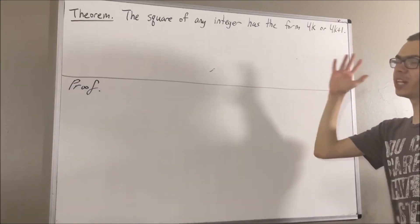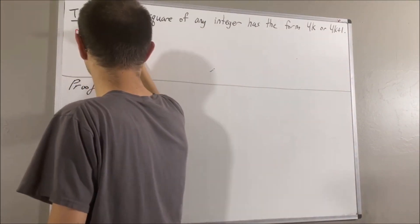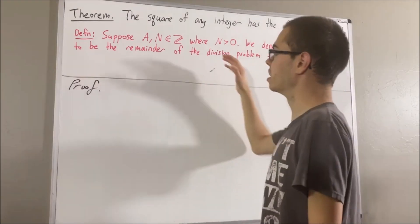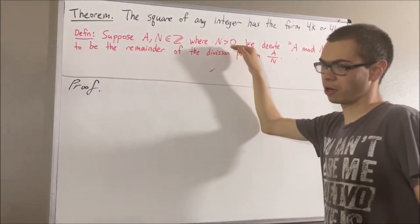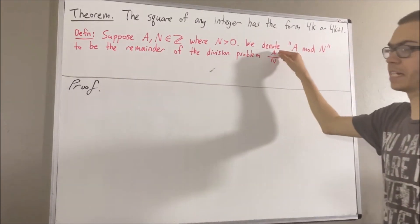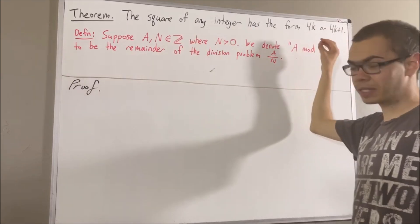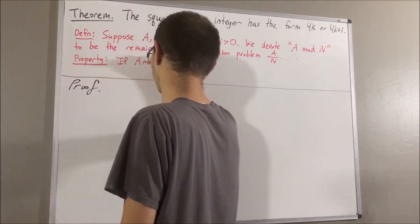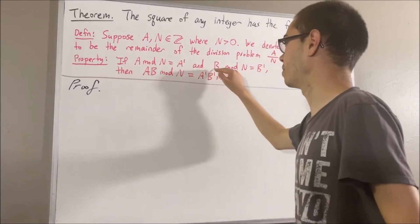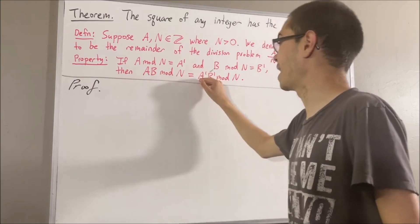In proving this theorem, we are going to use modular arithmetic. Let me first remind you how it works. Suppose a and n are integers where n is greater than zero. We denote a mod n to be the remainder of the division problem a divided by n. A property we are going to use is the following: if a mod n equals a prime and b mod n equals b prime, then a times b mod n equals a prime times b prime mod n.